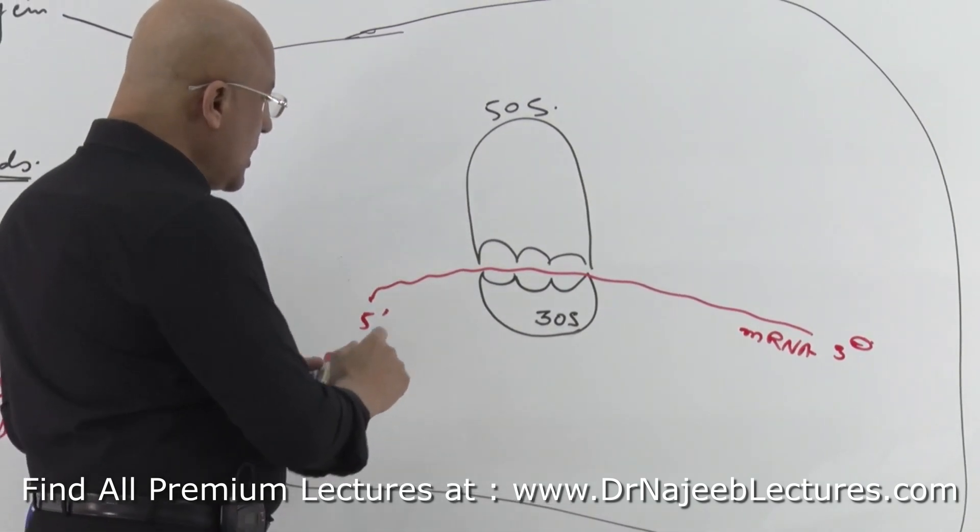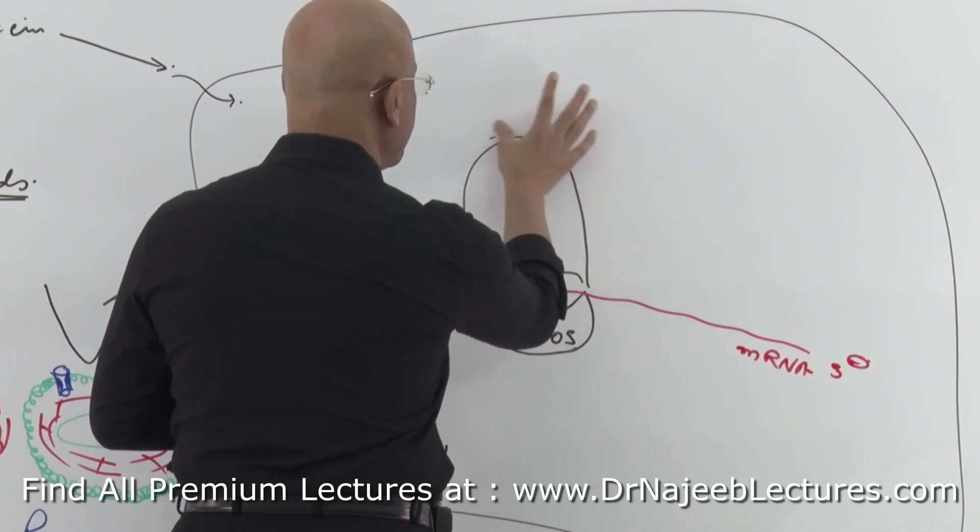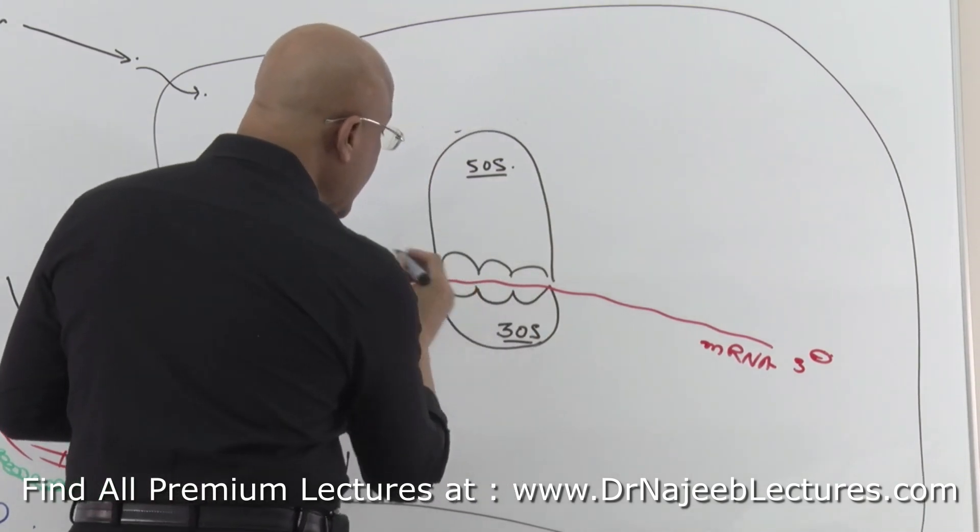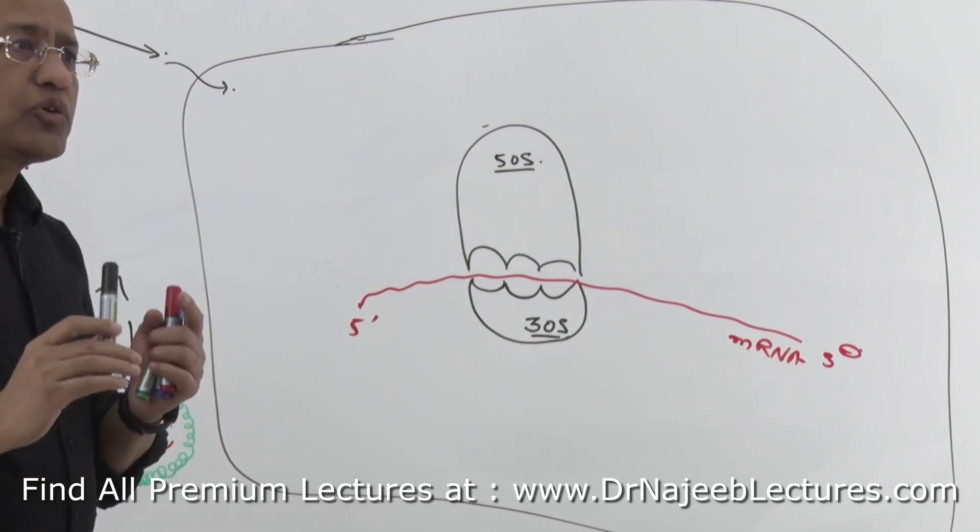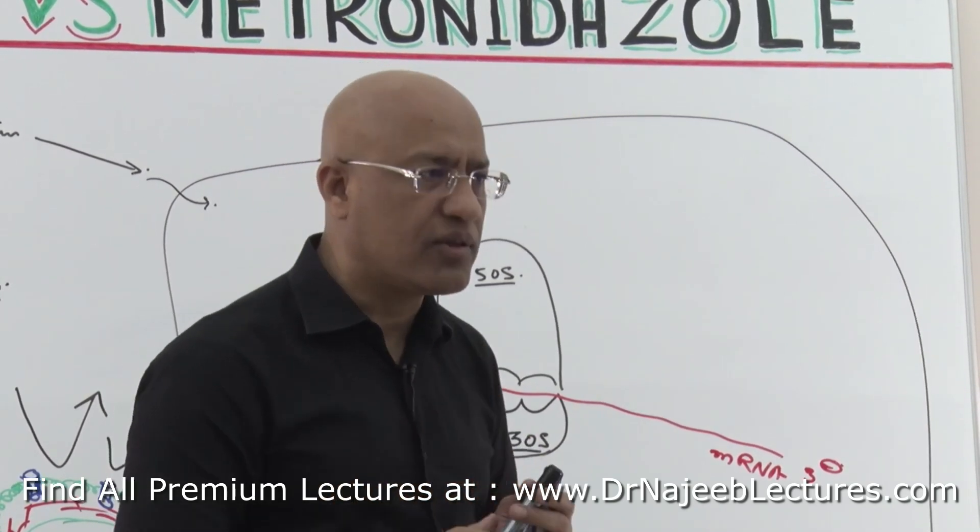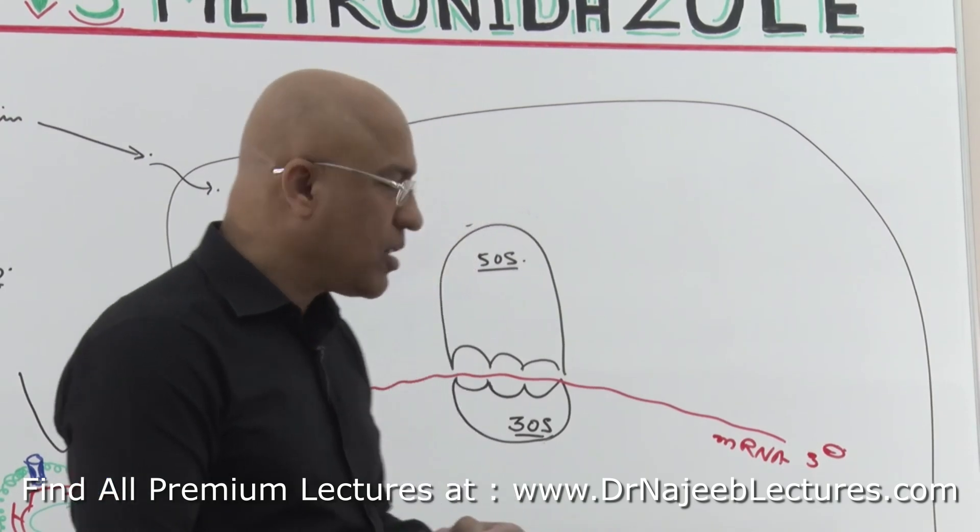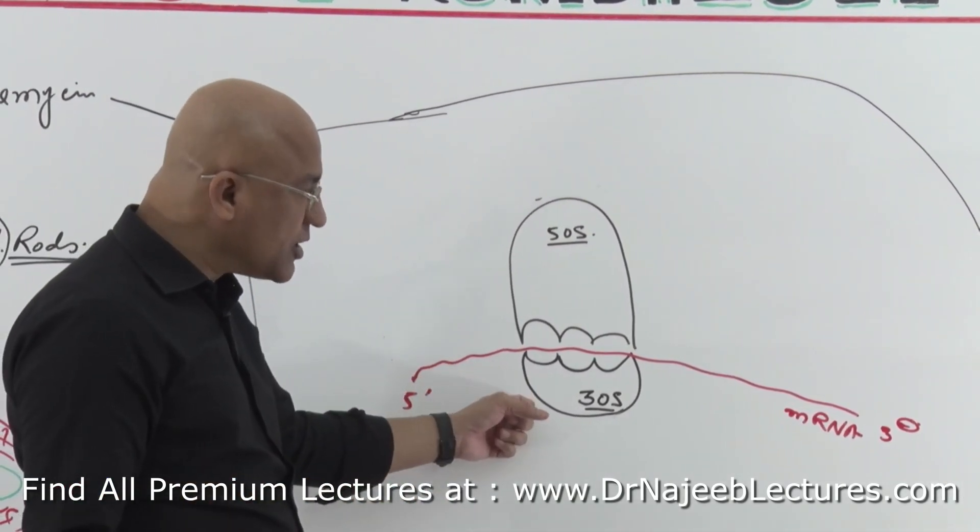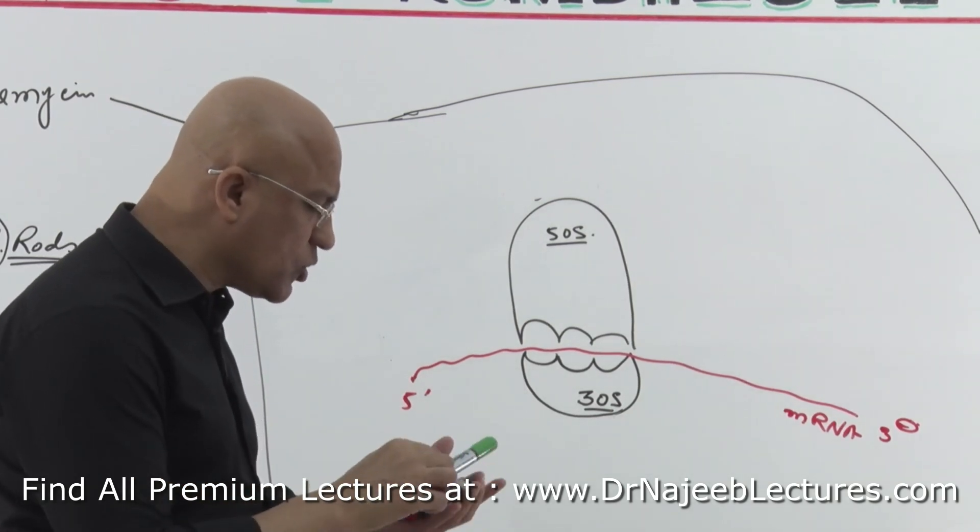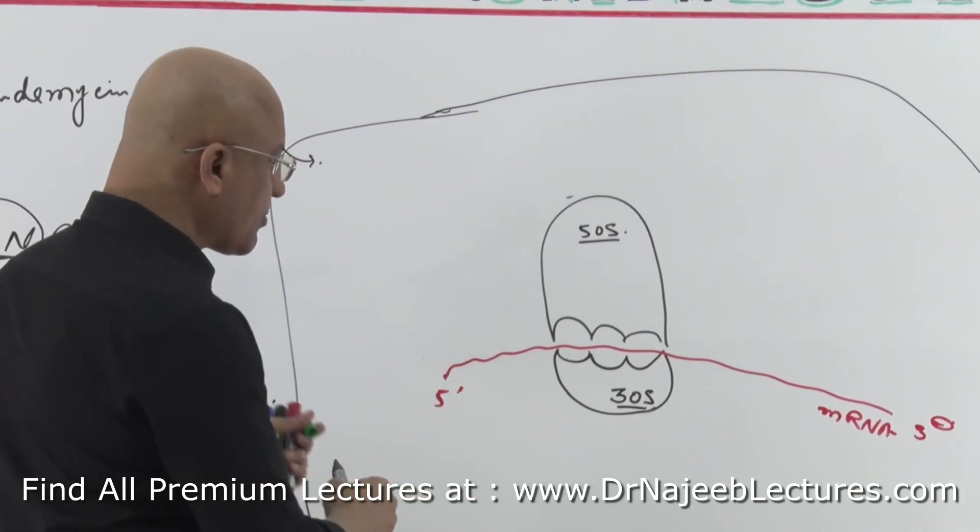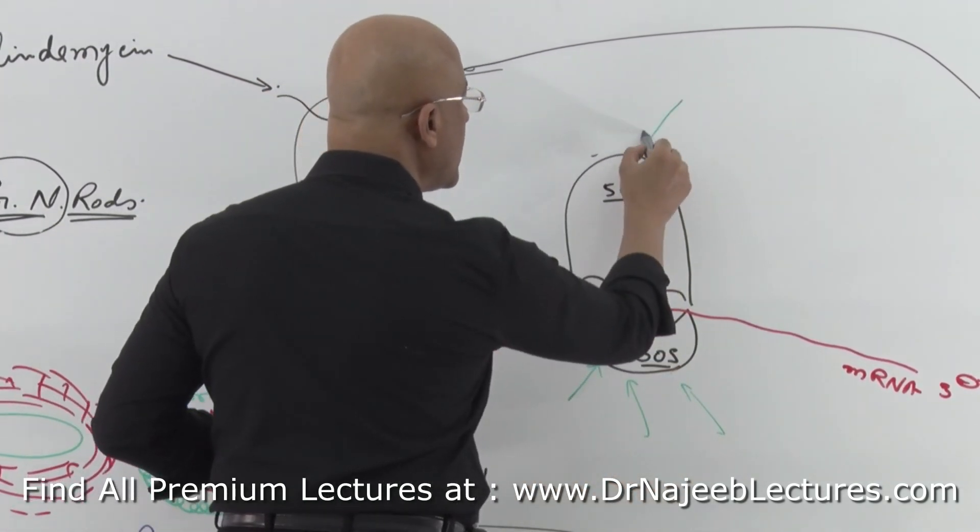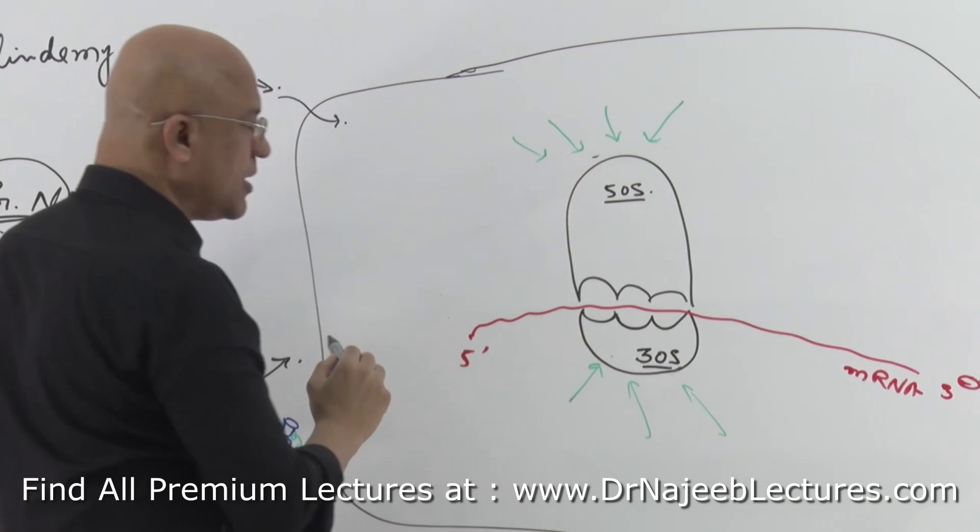Now, 30S unit and 50S unit - I will write down 50S unit here. The thing is, all antibiotics which inhibit bacterial protein synthesis are acting on bacterial ribosomes, either on 30S unit or 50S unit, and there is a big group. We can use a mnemonic to remember which antibiotic group works on 30S unit and which works on 50S unit.